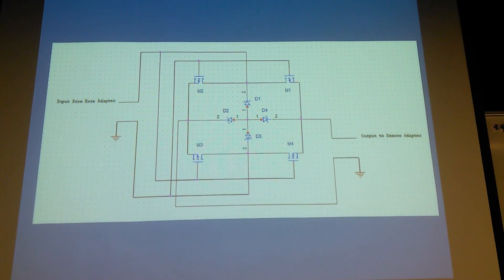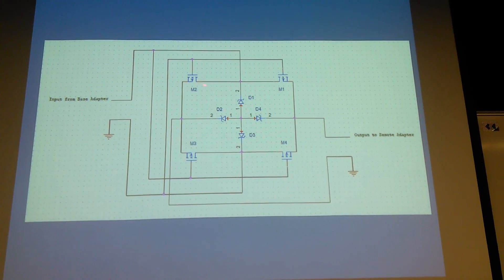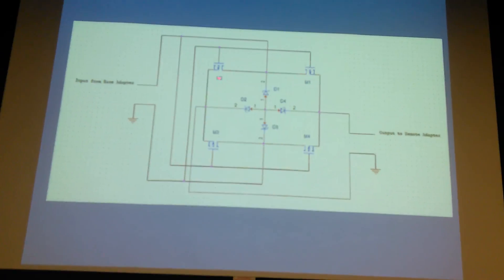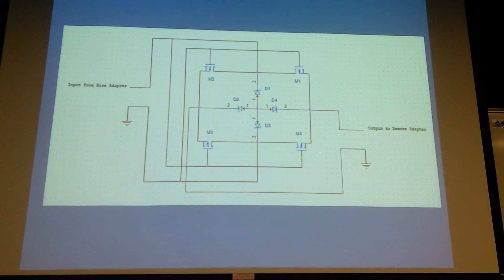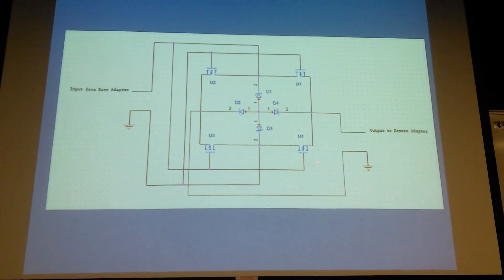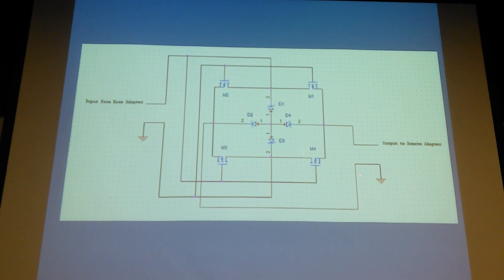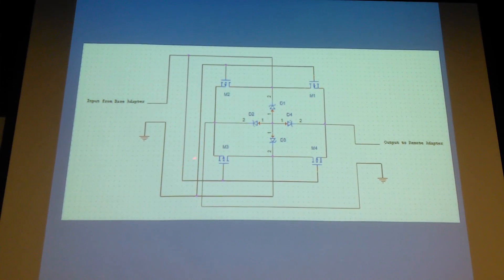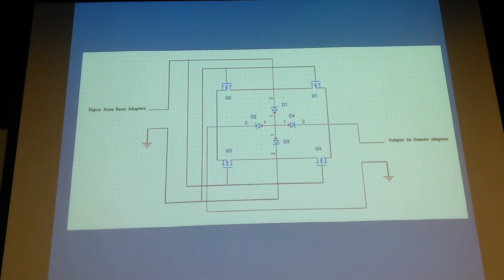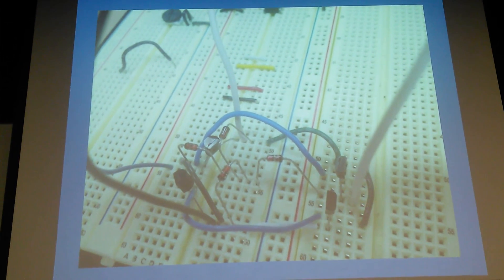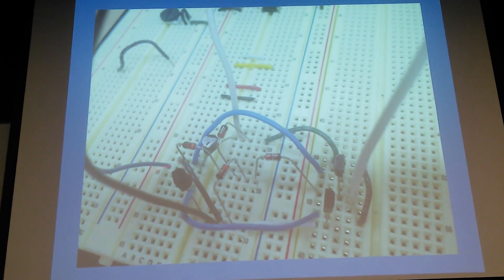This is a picture of the automatic polarity switch. These are the four 15 volt zener diodes. These are two N-channel MOSFETs and these are two P-channel MOSFETs. The P-channel MOSFETs make the drain and source the same point — an internal switch — when the source is 5 volts greater than the gate. The N-channel MOSFETs work the opposite: if the gate is 5 volts greater than the source, it makes the drain and source the same point.